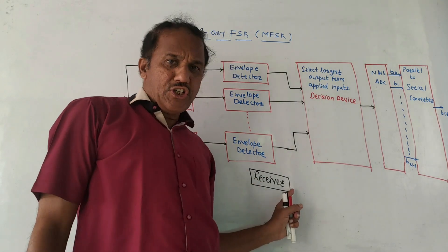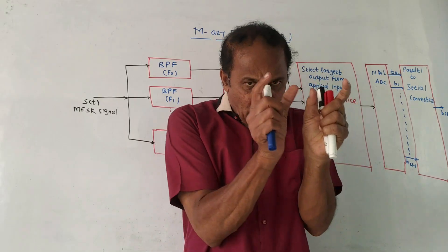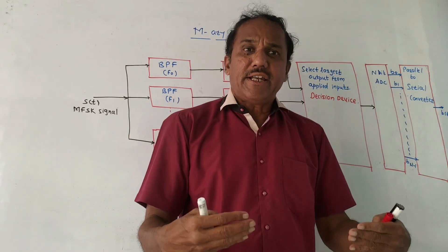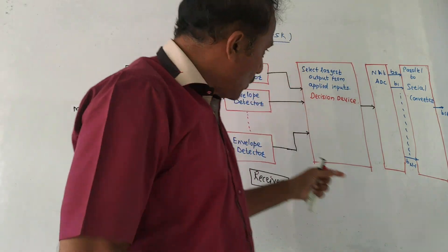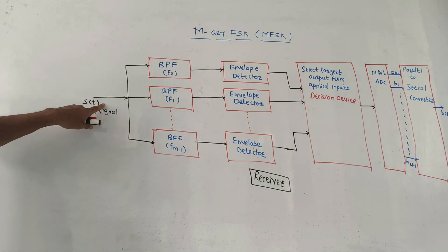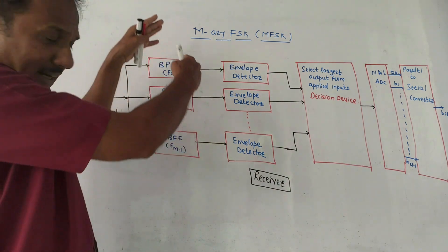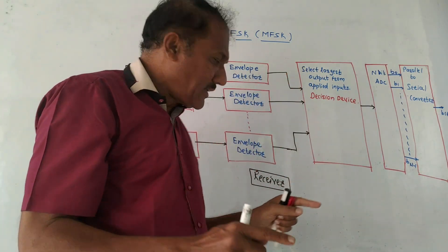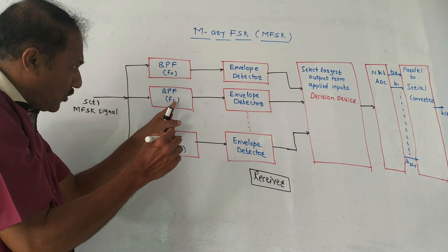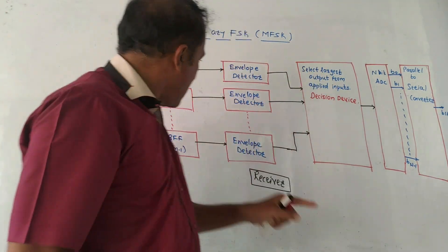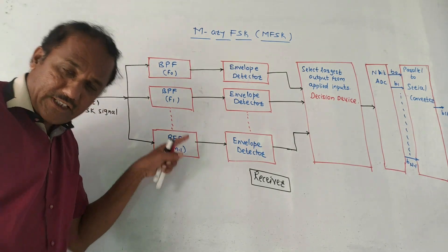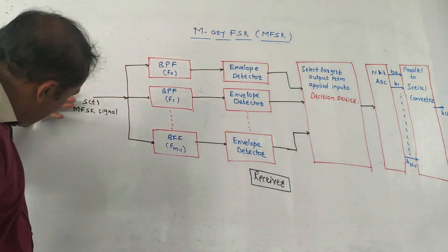Next is the receiver section of MFSK. We learned in the transmitter section that the last block, the frequency modulator, modulates the carrier signal's frequency according to the incoming data. The output of the transmitter, that is the output of frequency modulator, is applied as input to the receiver section. It is SO of t, that is the MFSK signal. The first block is a bank of n number of band pass filters, BPF. Depending on the requirement, a number of band pass filters are used. The center frequency of the first band pass filter is F0, for the second band pass filter the center frequency is F1, for the last band pass filter the center frequency is Fn-1, and so on.